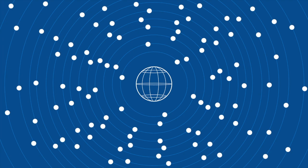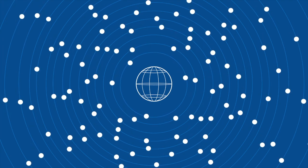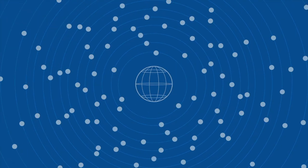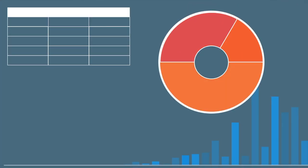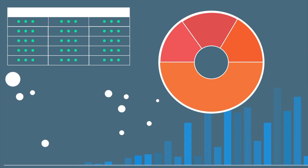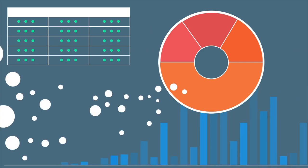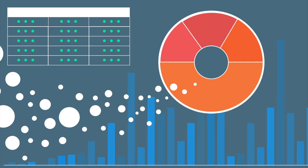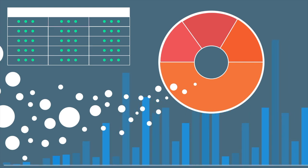Since 2014, the DHS Program API has provided instant access to the StatCompiler database of aggregated indicators, including fertility rates, mortality rates, and all of the almost 2,800 indicators found in the StatCompiler for over 90 countries over 35 years.